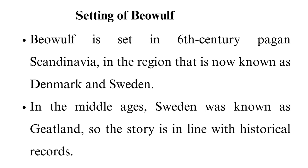Lines 2211–2515: In the past, the last survivor of an ancient race buried treasure since he felt it was of no use. A dragon found it and guarded it for three hundred years, but one day a thief stole a goblet. The dragon hunts the thief, and when he fails, he breathes fire on several villages. Beowulf's throne hall suffers one attack, and he wonders why God is punishing him. The now elderly Beowulf hires an iron smith to make a shield and, remembering his victory over Grendel, feels no need to assemble an army.